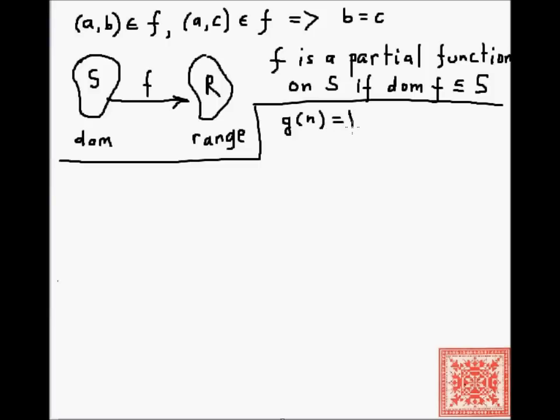Let's consider this function g(n) equals the square root of n. Let's say we are working with natural numbers, so we're going to go from N to N. So the domain of g is the set of natural numbers and the range of g is also the set of natural numbers. Then g is a partial function on N.